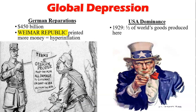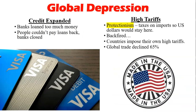The Global Depression occurred. German reparations totaled about $450 billion, so they printed more money, which caused hyperinflation. The U.S. in 1929 produced about half of the world's goods. Credit was expanding — banks loaned too much money, people couldn't pay those loans back, so the banks closed and there was no security for your money. We also had high tariffs. Protectionism means taxes on imports so that U.S. dollars would stay here, but that backfired because other countries imposed their own high tariffs, and global trade declined by about 65%. We'll go over more of this in class with activities, so don't worry if it's not all making sense — write down questions and we'll go over them before and after class.